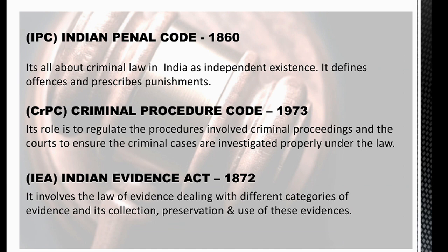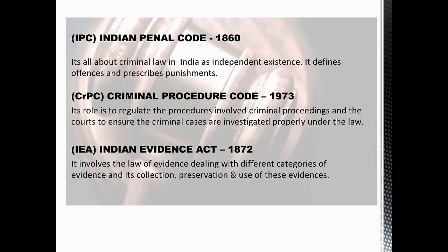IPC — Indian Penal Code — was drafted in the year 1860. This is an independent existence all about criminal law in India. It defines the offences and explains the appropriate punishments for these offences. Next, coming to CRPC — Criminal Procedure Code — which was enacted in the year 1973. This regulates the procedures involved in court proceedings and ensures whether criminal cases are investigated according to the law or not.